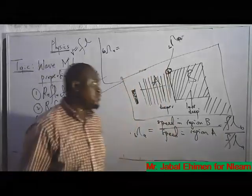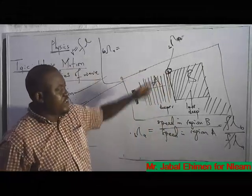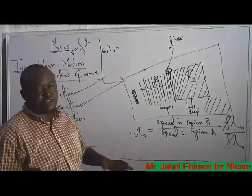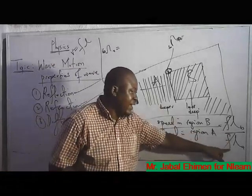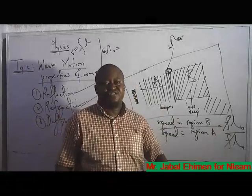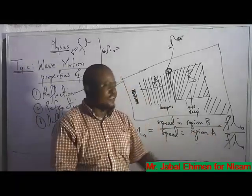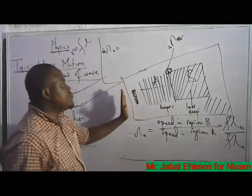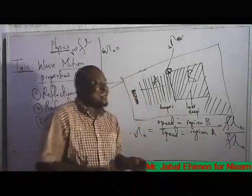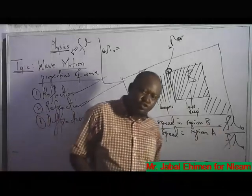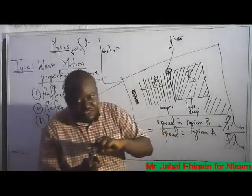Since V equals F lambda, the speed in B is F times lambda_B, and speed in A is F times lambda_A. The refractive index becomes lambda_B over lambda_A, because frequency can never change during refraction. During refraction, frequency is unaffected — only the wavelength changes. That bending is due to the fact that the wavelength has changed.